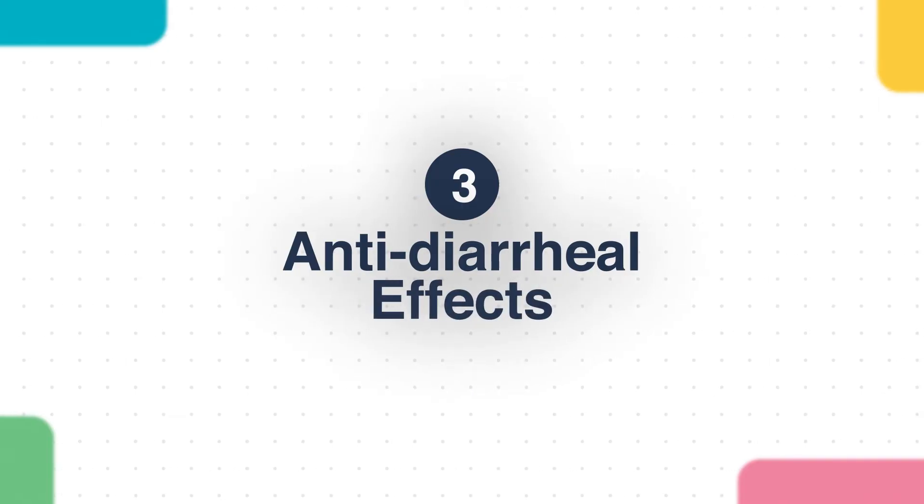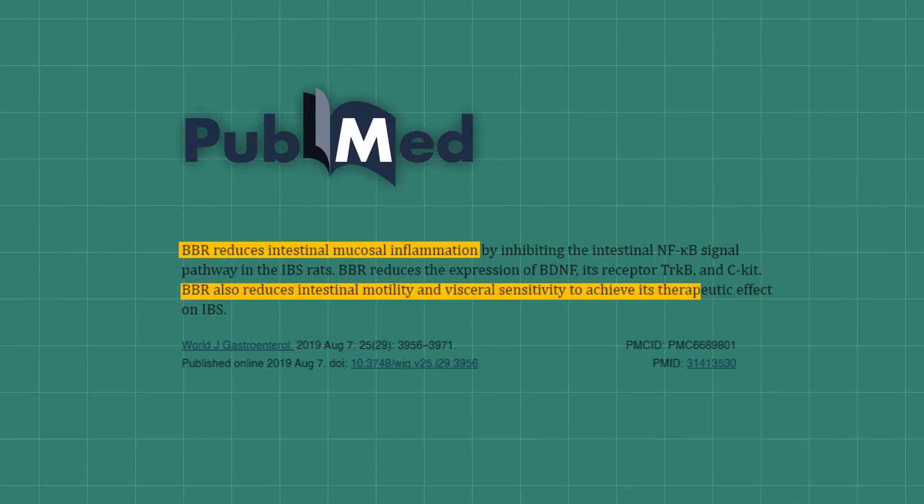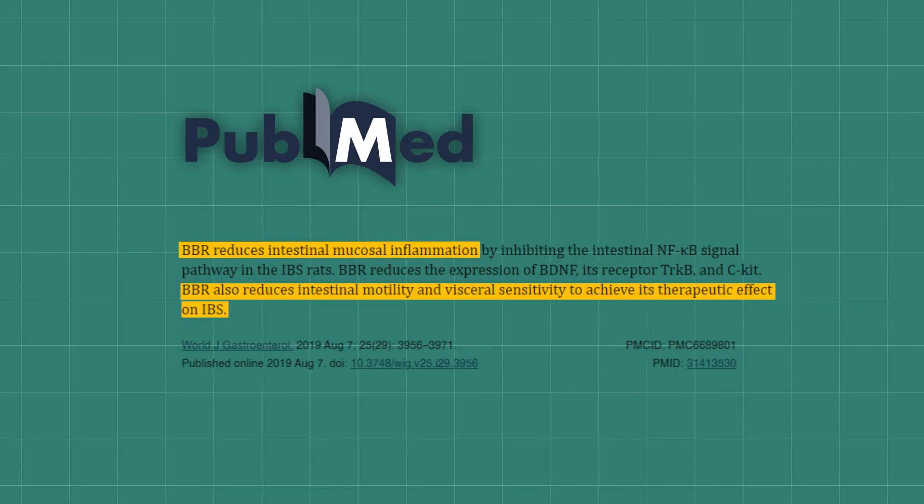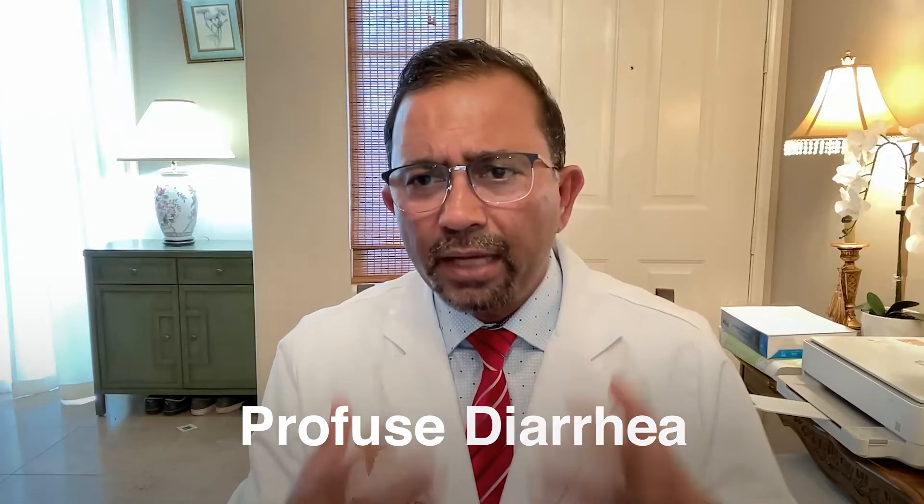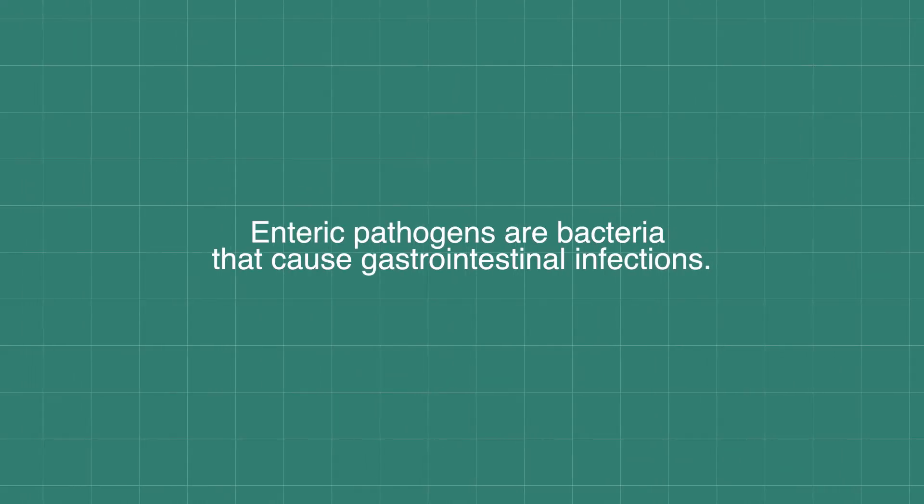Berberine also exhibits anti-diarrheal properties through multiple mechanisms. It can inhibit intestinal motility and secretion and reduce fluid accumulation in the intestine. During viral or bacterial infection causing intestinal inflammation, excessive motility and fluid secretion lead to profuse diarrhea. Berberine helps reduce this response and exerts antimicrobial effects against enteric pathogens, making it effective in treating both acute infectious diarrhea and chronic diarrhea associated with irritable bowel syndrome.